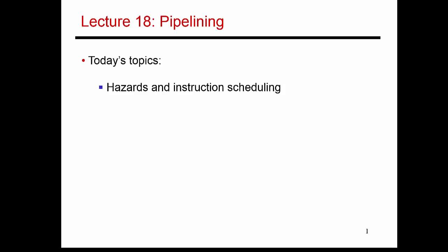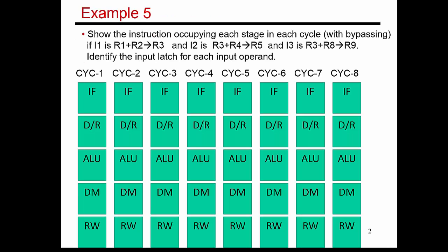In the last few videos, we saw how instructions flow through our five-stage pipeline, and we saw how to resolve data dependencies. Now I'm going to introduce the concept of bypassing or forwarding, which helps reduce the stalls introduced by these data dependencies.